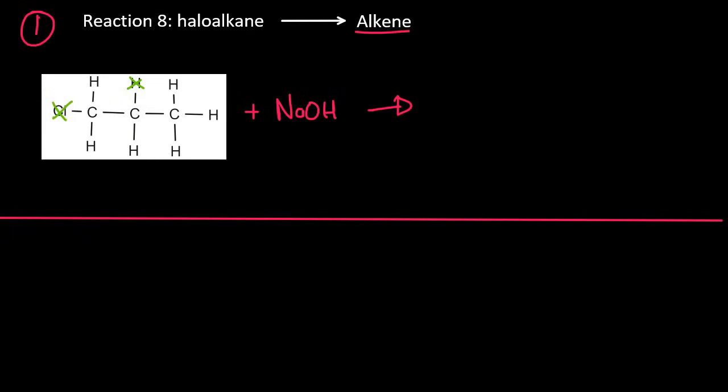And so the product would be CH, H, CH, CH, CH, and H. And so what we should identify is that we've lost something over here, and we've lost something over here. So what that now means is that these two carbons over here only have three bonds. And so to fix that, we put a double bond.